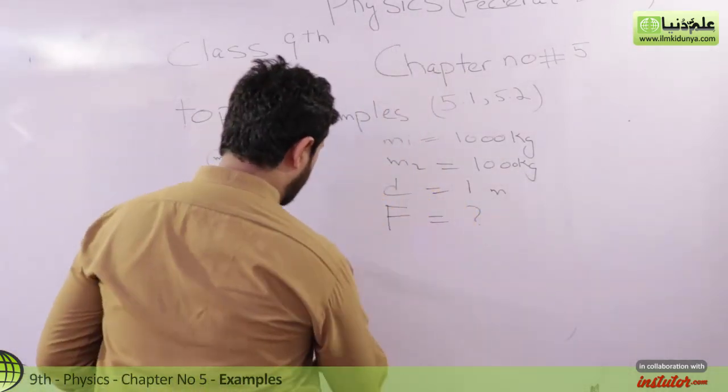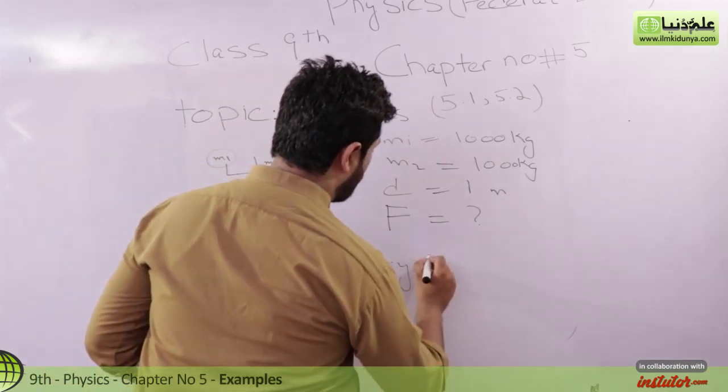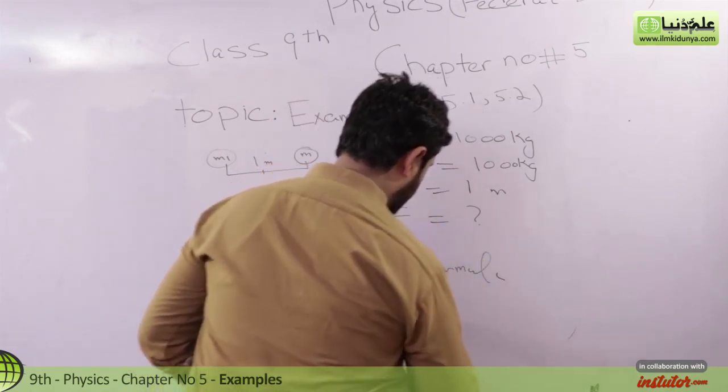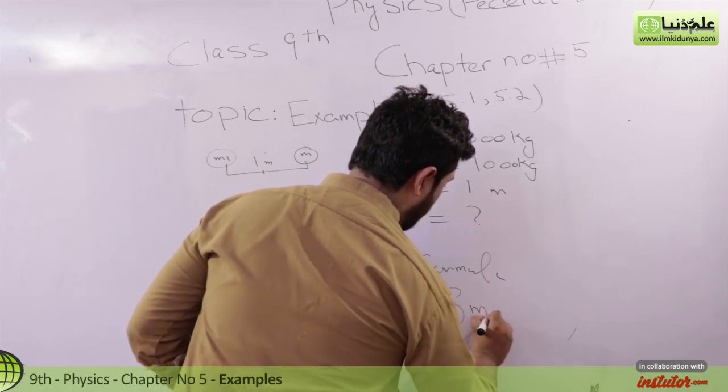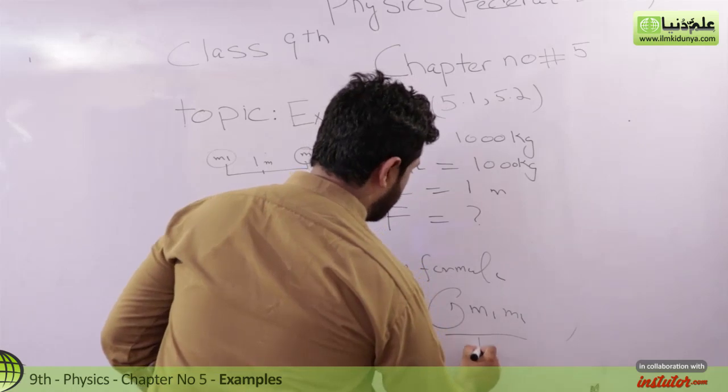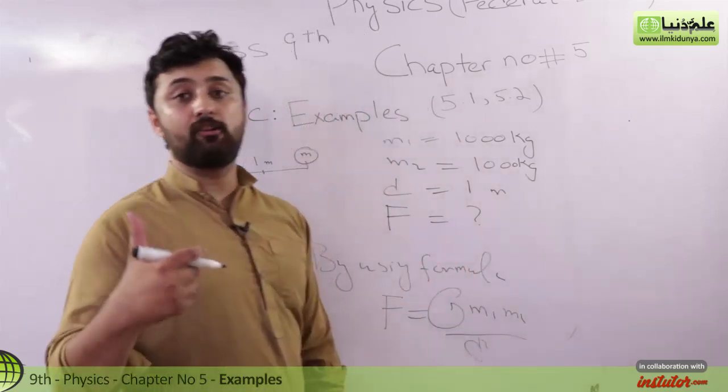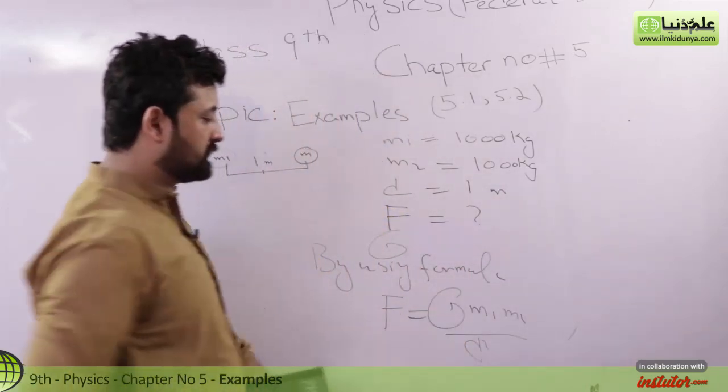Okay. Now, when you write the formula, by using formula, F is equal to gravitational constant G times m1 times m2 over d square. Now, gravitational constant has not been given. Why? Because you have to remember.